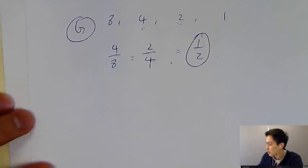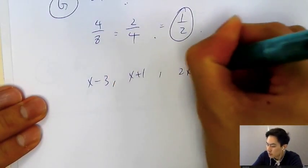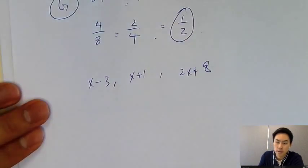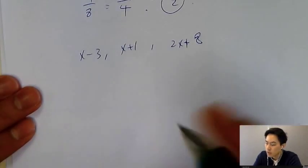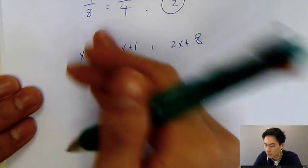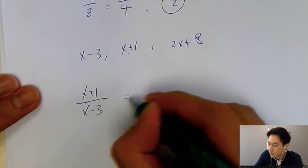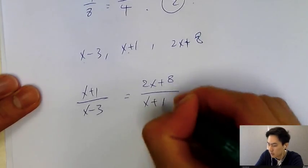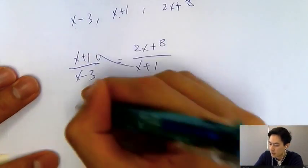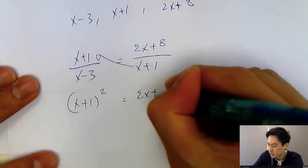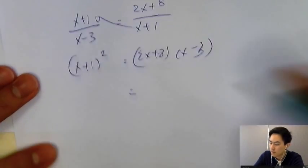How would the exam question look like? Let's say we have x minus three, x plus one, and two x plus eight. The question tells you this is a geometric sequence. How do you solve x? You need to apply the concept we just learned: x plus one over x minus three, second term over first term, must equal the third term over the second term. Then we cross multiply: x plus one squared equals two x plus eight times x minus three.